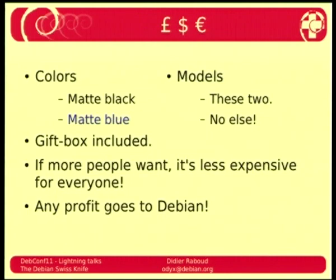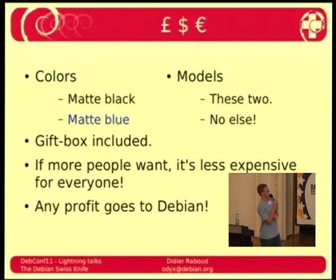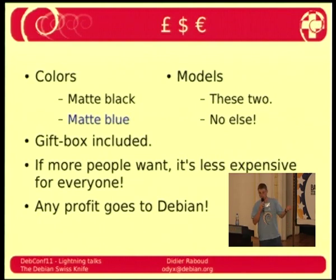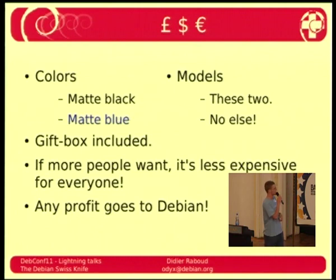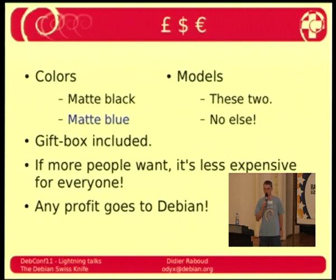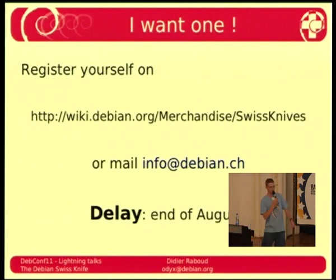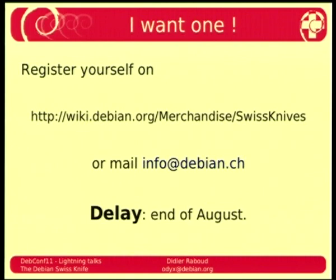About the prices: as I said, you can buy them in black or blue. There are only these two models. You can also buy other Swiss Debian knives without the Debian branding by yourself. Or if we organize at DebConf 13 in Switzerland, you'll be able to buy multiple Swiss knives. The gift box is included, and the more people buy, the less expensive it is for everyone — the prices I showed are maximum prices. Any profit goes to Debian through the Debian CH association. If you want one, go on the wiki and register yourself at merchandise/Swiss-knives, or mail info@debian.ch. The deadline to order them relatively soon is the end of August, so please hurry.